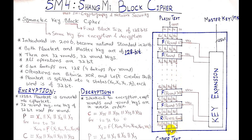The plaintext is input and we get the cipher text as output, with every round using a round key. For the encryption process, we divide the plaintext into x0, x1, x2, and x3, then pass them one by one to the round function F, which is iterated 32 times from round 0 to round 31, generating x4, then x5, then x6, x7, and so on.